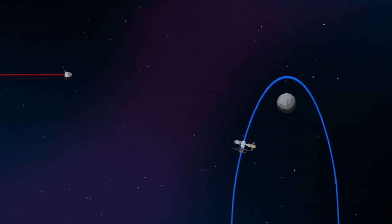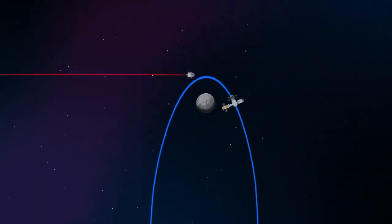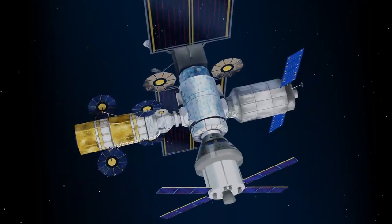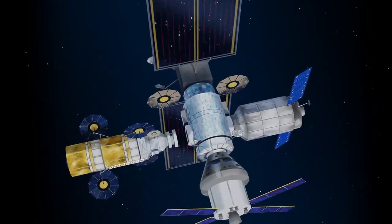Returning to our crew as they approach Gateway, the Orion must match the elliptical orbit of the station in order to successfully dock. Once on board, pre-selected crew members transfer to the lunar lander, while those assigned to Gateway remain on station.